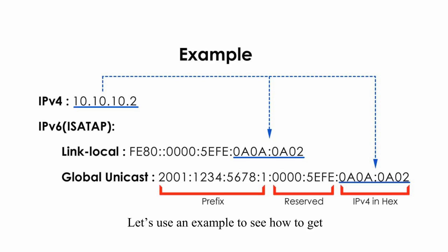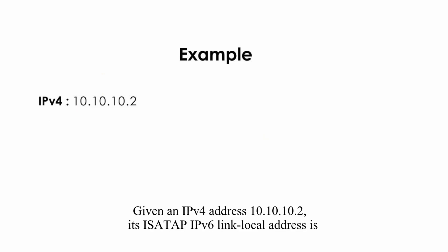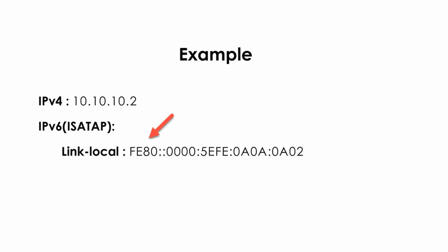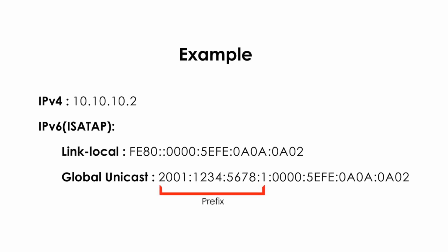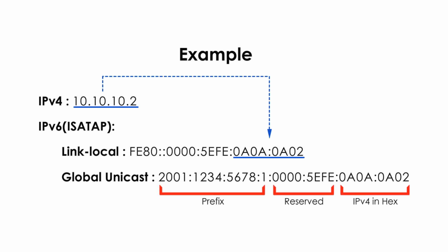Let's use an example to see how to get an ISATAP IPv6 address from an IPv4 address. The ISATAP IPv6 link local address is derived from the IPv4 address. For the global unicast address, the first half looks like 2001:1234:5678:1, and the second half is 0:5efe:080a:0802. Notice the last 32-bit hexadecimal numbers come from the IPv4 address.